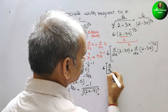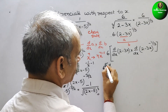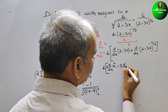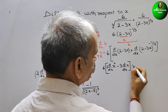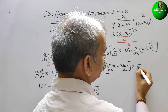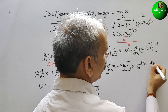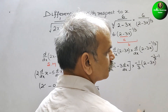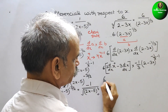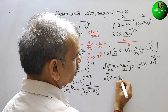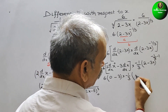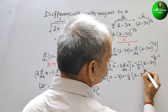This gives d by dx of 2, which is a constant, so we write x to the power 0, and then minus 3 times d by dx of x. This is in the form of x to the power n, so we get minus 1 by 3 times 2 minus 3x to the power minus 1 by 3 minus 1, which equals minus 4 by 3. Solving: d by dx of constant is 0; and minus 3 times minus 1 by 3 times 2 minus 3x to the power minus 4 by 3.